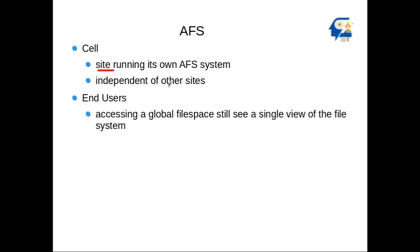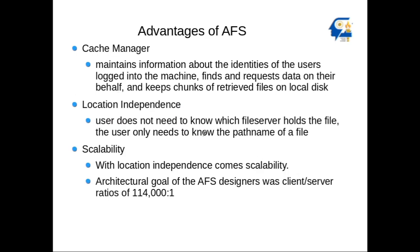A cell is a site running its own AFS system and is independent. From the user's perspective, they are accessing a global file space or namespace. The cache manager maintains information about the identities of users logged into the machine, handles data requests, and keeps chunks of retrieved files on the local disk to make file retrieval efficient.